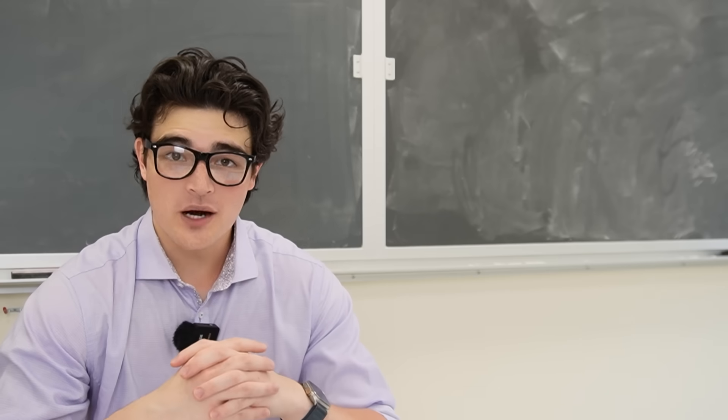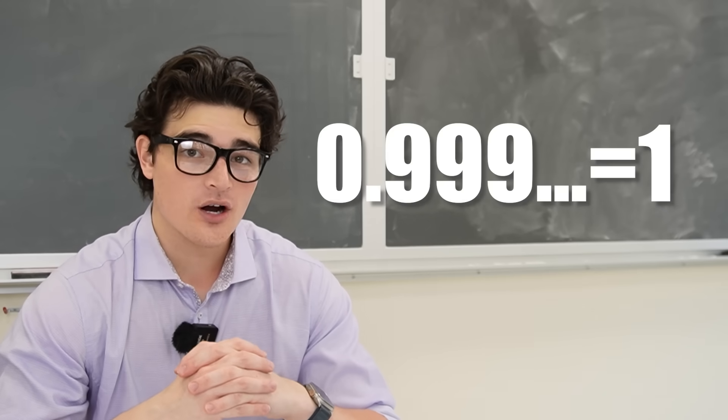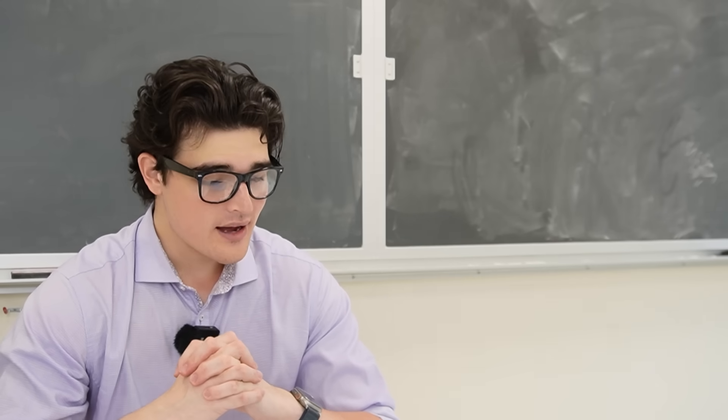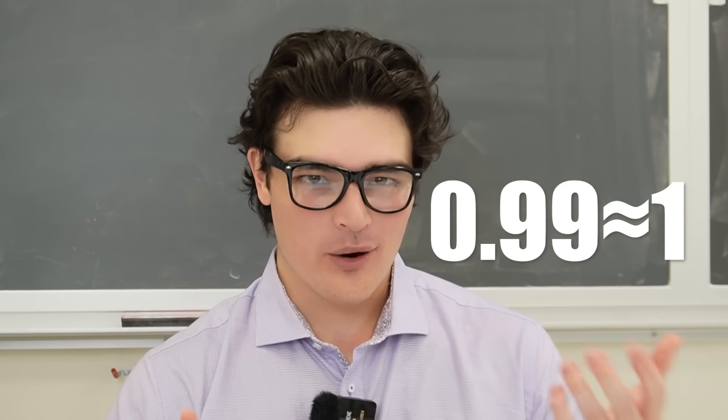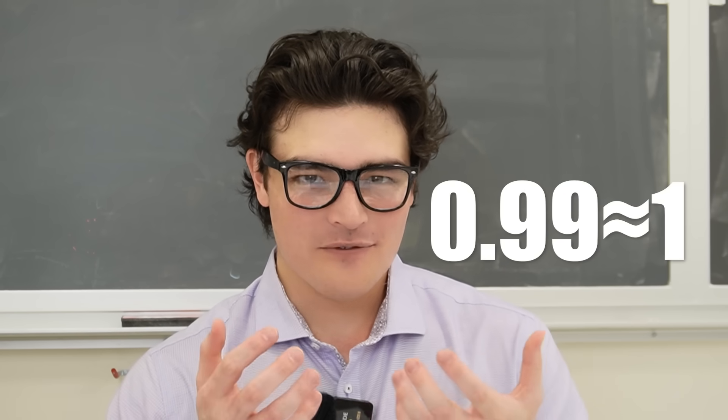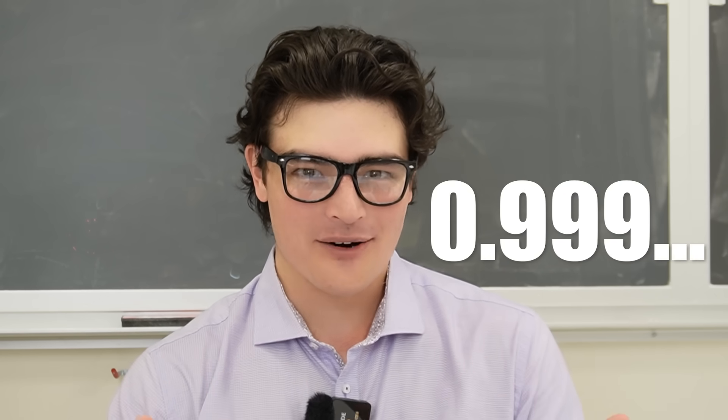Now, the final comment I have comes from a video where I say that 0.9 recurring is exactly equal to 1. And the comment reads: Wrong! 0.99 is approximately 1. They teach this in elementary school in Europe. I mean, technically you're not wrong. 0.99 is only approximately equal to 1. But the video was about 0.9 recurring.